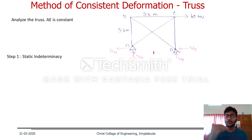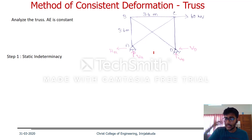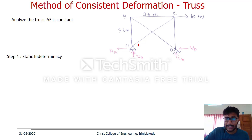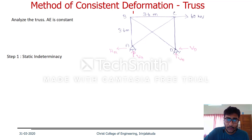Let us try to solve this structure using the method of joints. At joint A, only two members are connected: AB and AC.